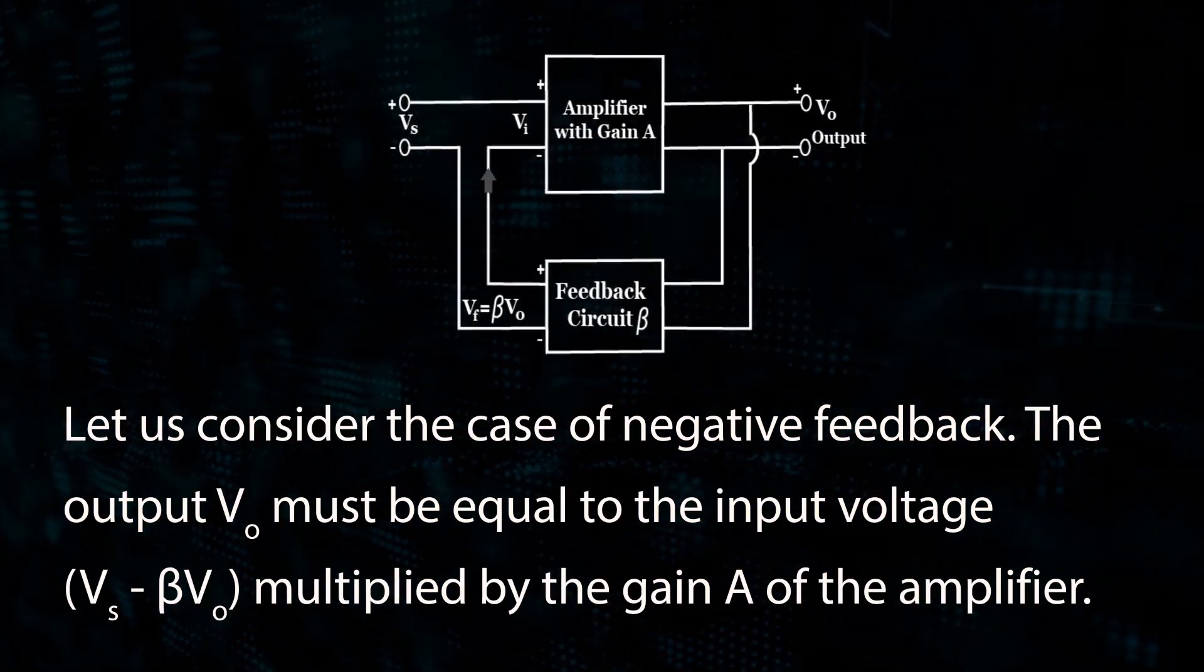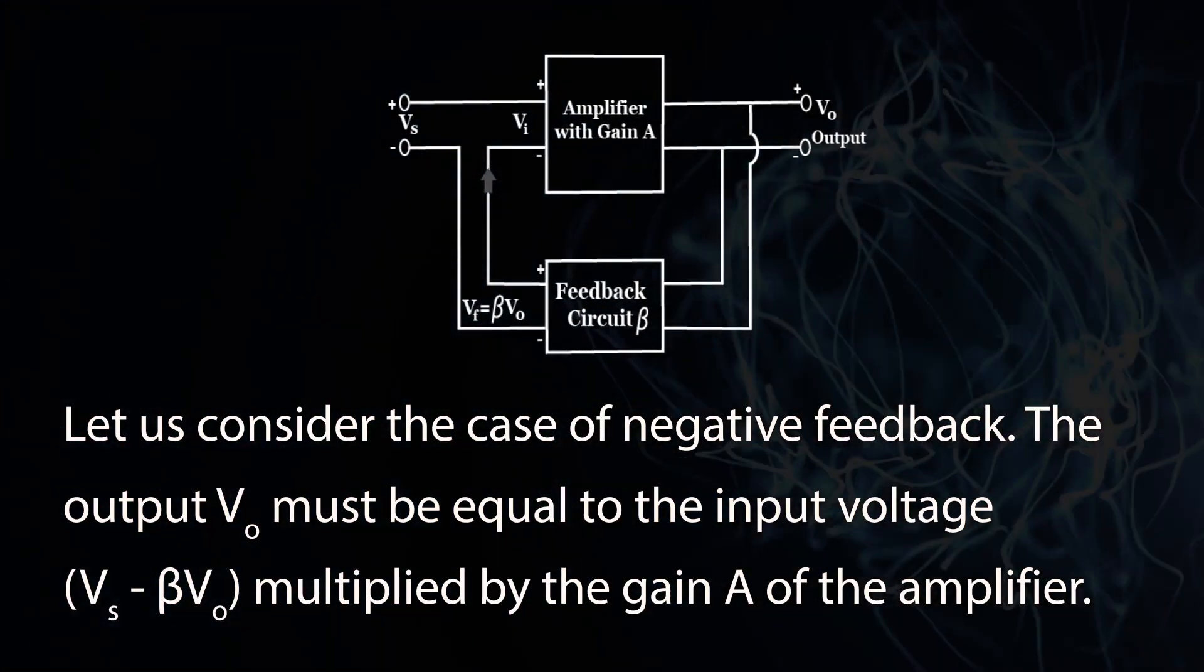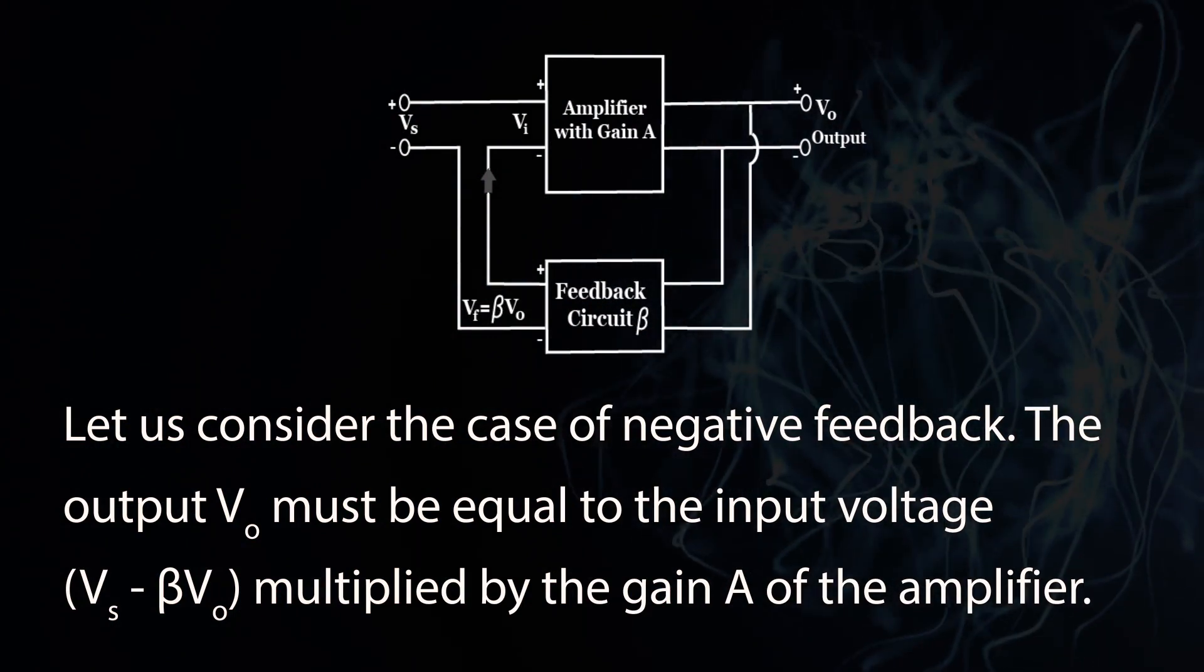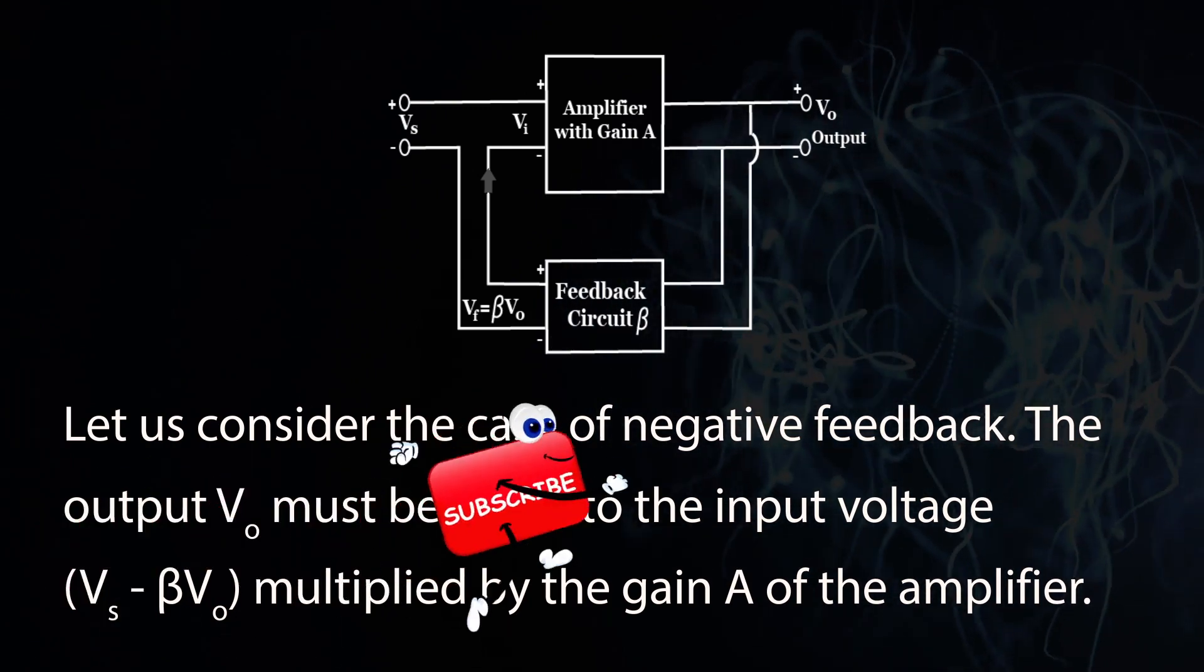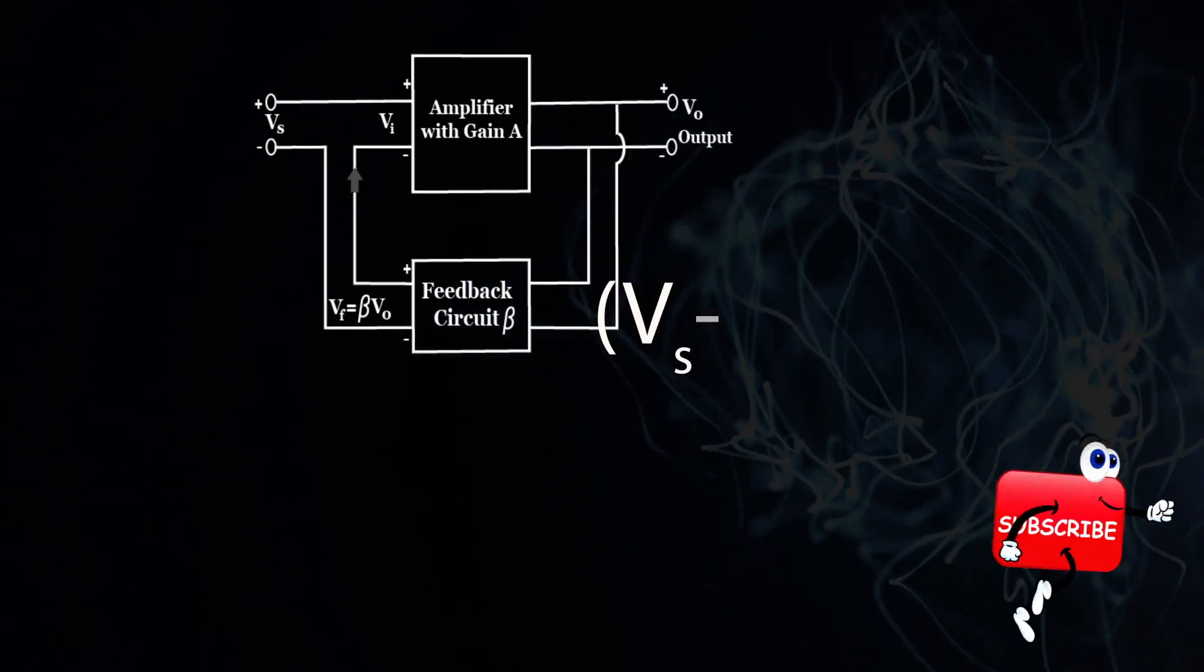Let us consider the case of negative feedback. The output Vo must be equal to the input voltage Vs minus beta Vo multiplied by the gain A of the amplifier.